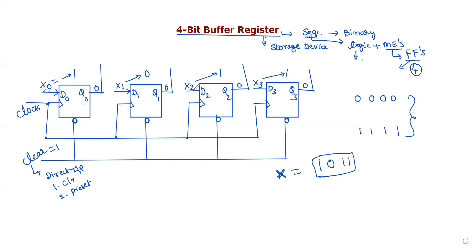The external input bits are directly applied to the D inputs of the flip-flops. The clock is then supplied. Before the clock pulse, the present state value is the same as the previous value — that is, 0,0,0,0. All flip-flops are initialized to zero. The register is now ready to work.